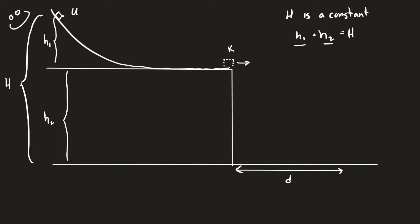The argument for why small H2 causes small D is kind of the reverse. If H1 is really large, the object has huge kinetic energy at the edge of the table, but it won't have very much time in the air to fall. With horizontal distance related to horizontal velocity times time, when H2 is small, by necessity T is also very small. So it might be traveling fast, but it can't travel horizontally very far.